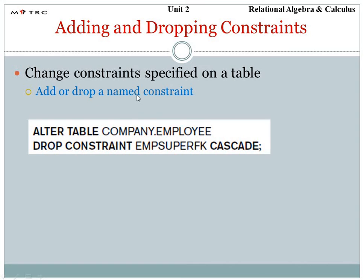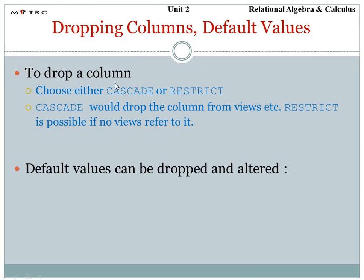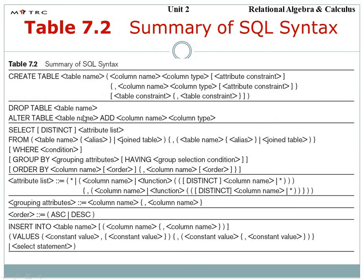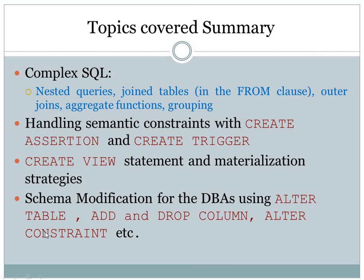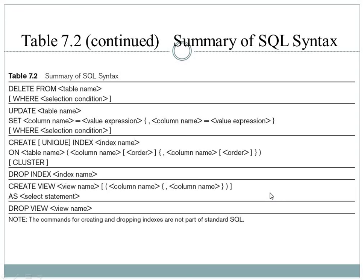For example, alter table company employee, specifying which table you want to change, then drop constraint with the constraint name. This is a syntax summary covering select, group, and order clauses as well.